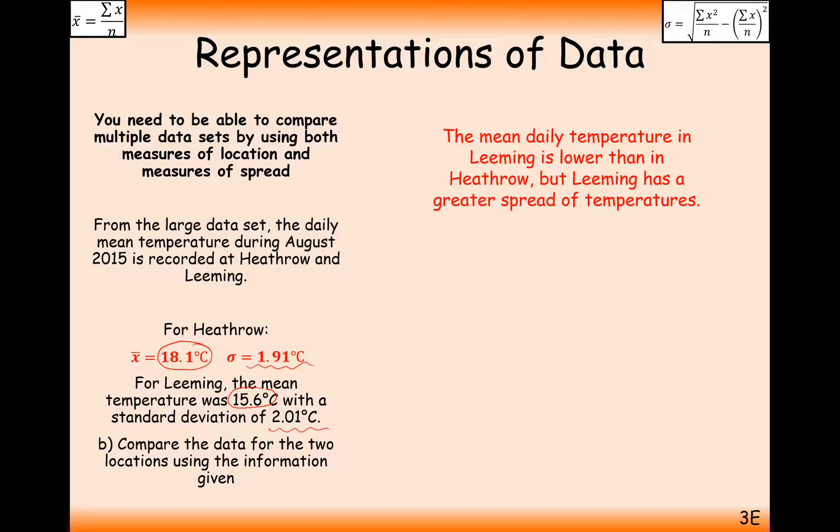Compare the two data sets. What we can say here is that the mean daily temperature for Leeming is lower than Heathrow, 15.6 compared to 18.1, but Leeming has a greater spread of temperatures, 2.01 comparison to 1.91.